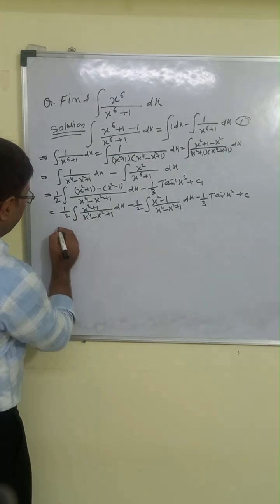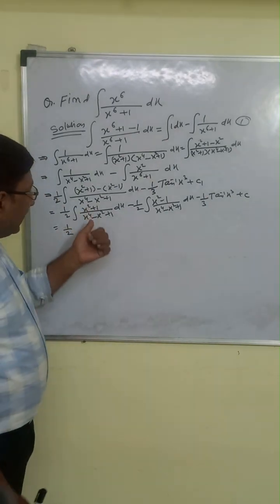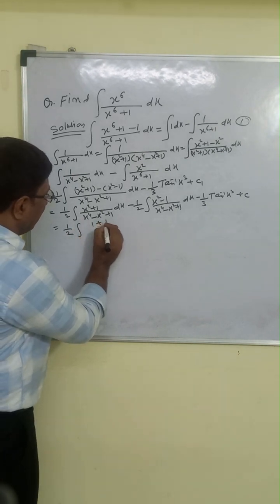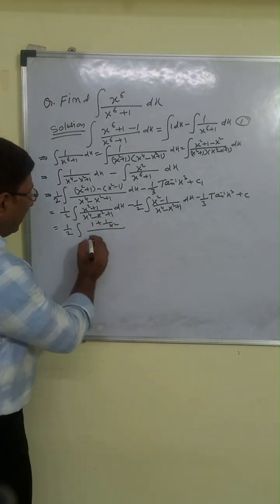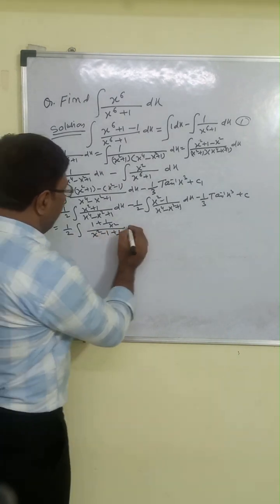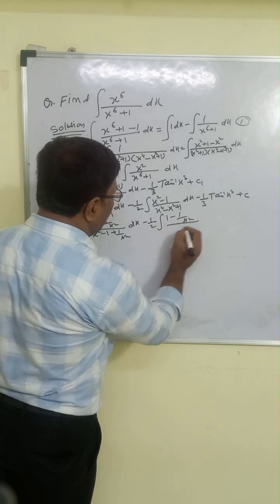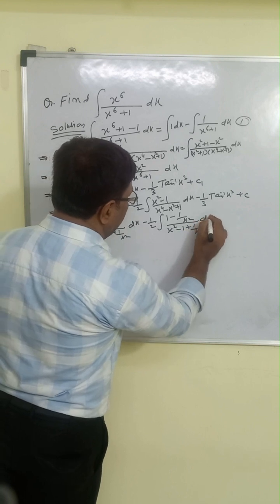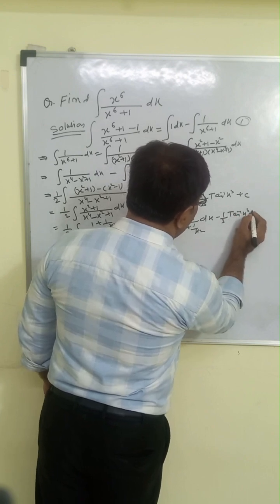Now this is one half, and this has x² plus 1. When we divide numerator and denominator by x², we get 1 plus 1/x² on top. The denominator x⁴ minus x² plus 1 divided by x² gives x² minus 1 plus 1/x². Similarly for the second part: one half times 1 minus 1/x² over x² minus 1 plus 1/x² dx. And we already have minus 1/3 arctan(x³) plus c.